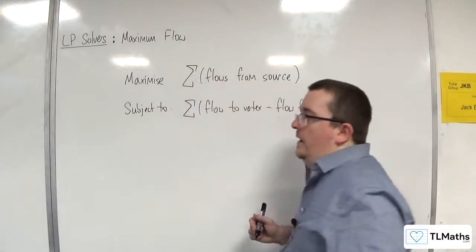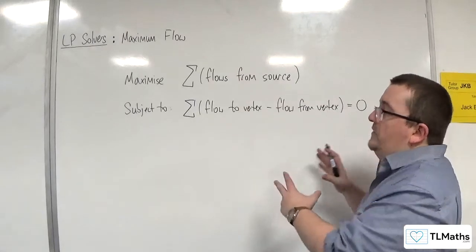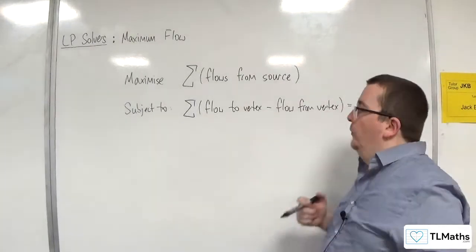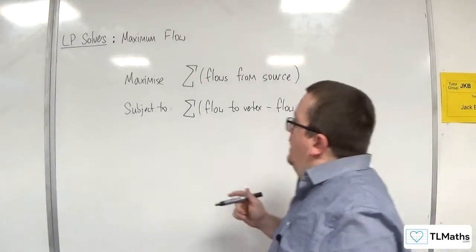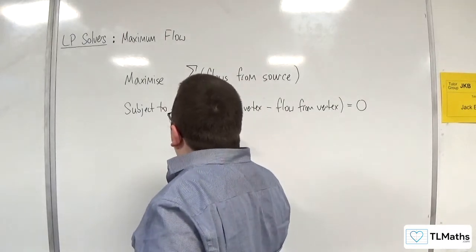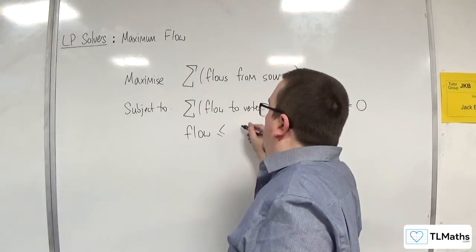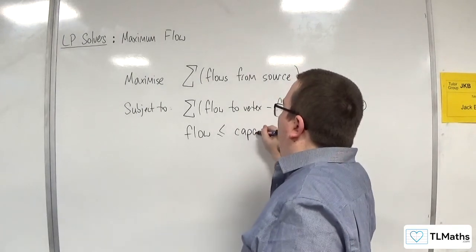And then you need that for each of the vertices that aren't the sink or the source. And then you need each of the possible flows less than or equal to their capacities.